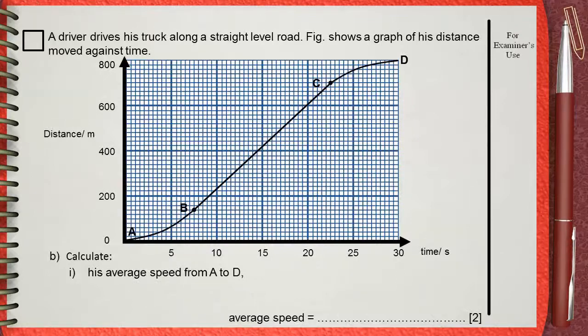A driver drives his truck along a straight level road. Figure shows a graph of his distance moved against time. Question B: Calculate his average speed from A to D.